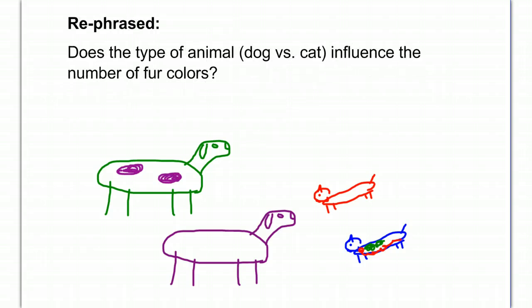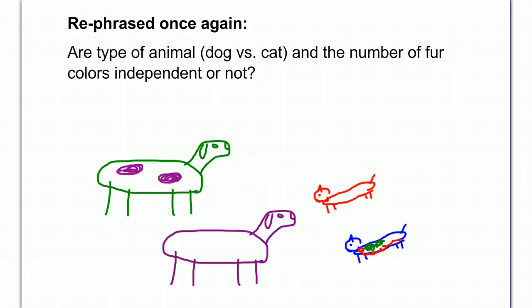If you rephrase that a little bit, what you really are trying to figure out is does the type of animal, dog versus cat, influence the number of fur colors? Or, phrased even differently yet, are the type of animal and the number of fur colors independent or not?